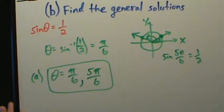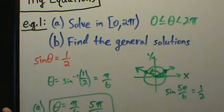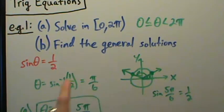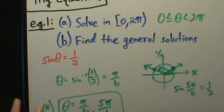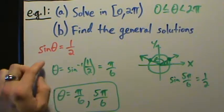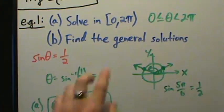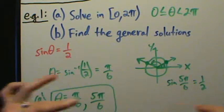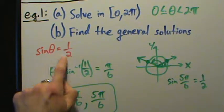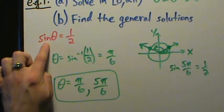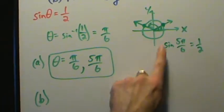So we'd miss the one in quadrant 2, which is why we go back to the unit circle. For part B — find the general solution — this is actually pretty straightforward. Here we have two specific solutions, and we can use them to get all the rest of the solutions. Sine of theta equals 1/2 actually has infinitely many solutions, because there are infinitely many values of theta with sine equal to 1/2. There are only two of them in the interval 0 to 2π, but on the entire real number line there are infinitely many.